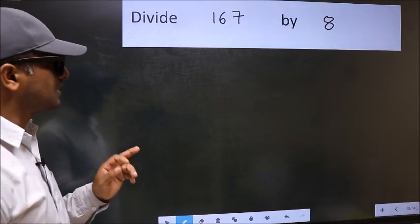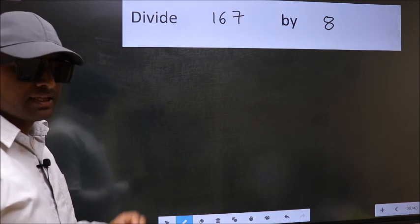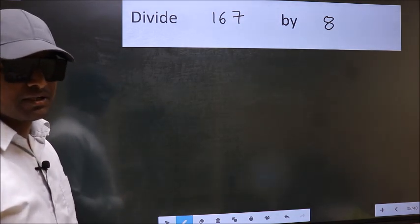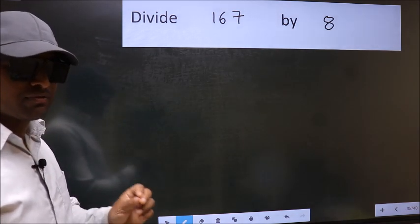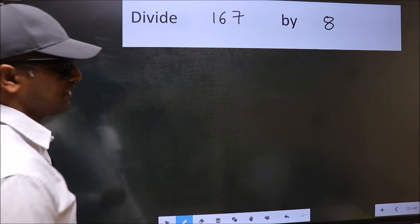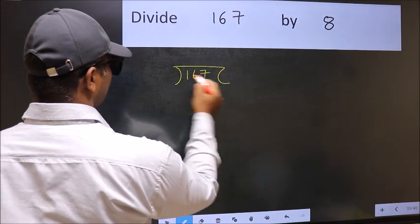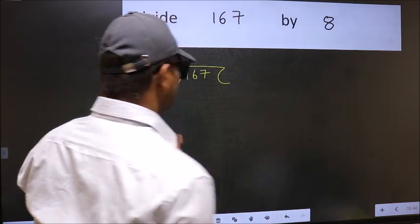Divide 167 by 8. While doing this division, many do this mistake. What is the mistake that they do? I will let you know, but before that we should frame it in this way: 167 and 8. Here this is your step 1.